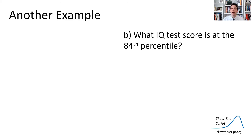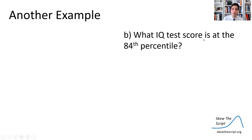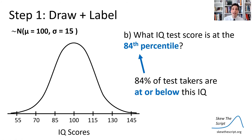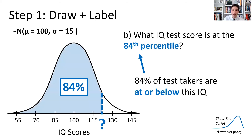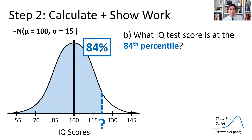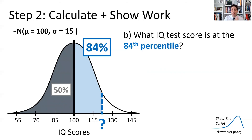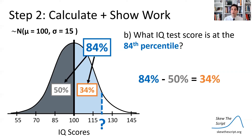Now let's go through another example. What IQ test score is at the 84th percentile? I'm going to draw and label my normal curve again. The word percentile means the percent that are at or below a certain value — so 84% of test takers are at or below a certain IQ that I'm looking for. It's going to be somewhere on the right side of that curve. One way to break this down is: at the mean of 100, I'm already at the 50th percentile — 50% of the data is below that mean. So that takes out a 50% chunk from the 84% I'm looking for, leaving about 34% left to account for.